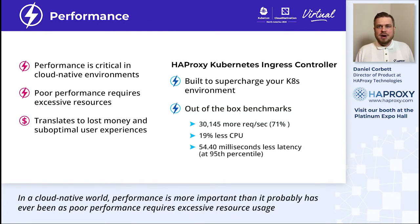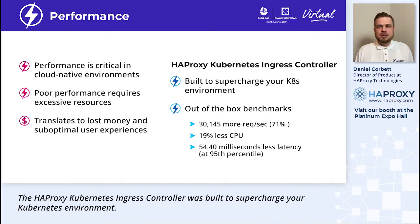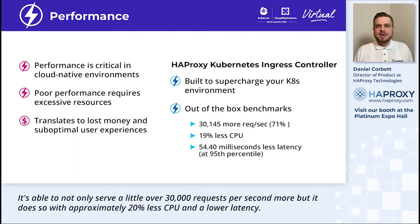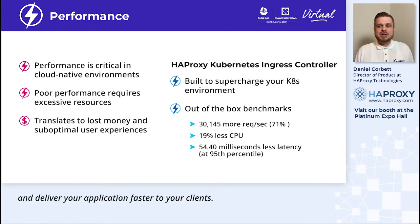Let's start with performance. In a cloud-native world, performance is more important than it probably has ever been, as poor performance requires excessive resource usage, which results in a higher cloud spend. It can also translate to a suboptimal user experience. The HAProxy Kubernetes ingress controller was built to supercharge your Kubernetes environment. Out-of-the-box benchmarks show that it significantly outperforms the default ingress controller, which relies heavily on Lua scripts. It's able to serve over 30,000 more requests per second, while doing so with approximately 20% less CPU and lower latency. Ultimately, this means you will instantly be able to handle more requests per second with a smaller instance type and deliver your application faster to your clients.